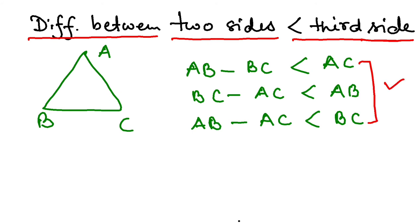Let's take three sides: three, four, and five. If I take four minus three, that is one, less than five, right?